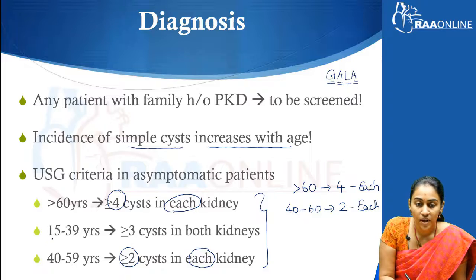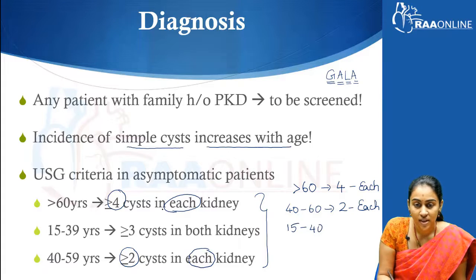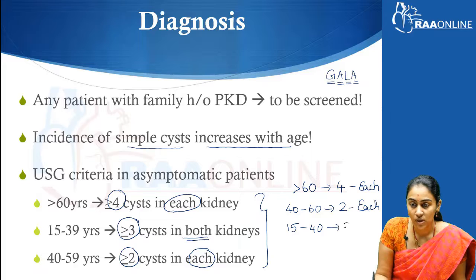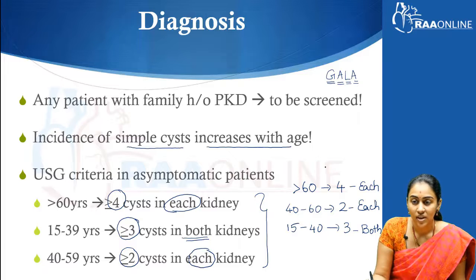In a patient between 15 to 40 years, the patient needs to have 3 or more cysts in both kidneys put together. So, 3 or more cysts total across both kidneys combined — that is what we need to remember for this age group.